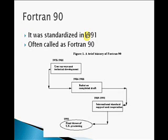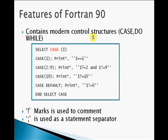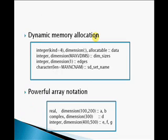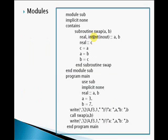Fortran was next standardized in 1991. This version contains modern control structures such as case statements and dual keywords. Fortran 90 uses dynamic memory allocation, which allows programmers to define the value of an array by listing its items between two special delimiters. Fortran 90 also contains a powerful array notation, and use of dynamic arrays decreases memory requirements and simplifies source code since one does not have to use the common block. Modules were another important feature added in Fortran 90, providing global definitions with hidden internal details.